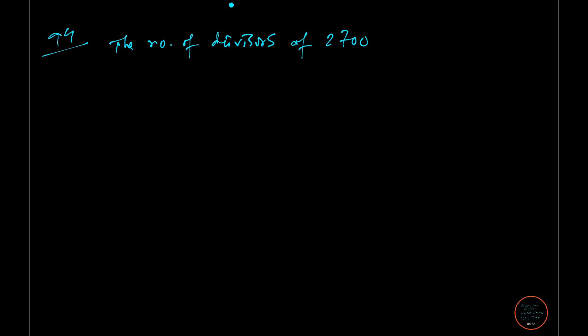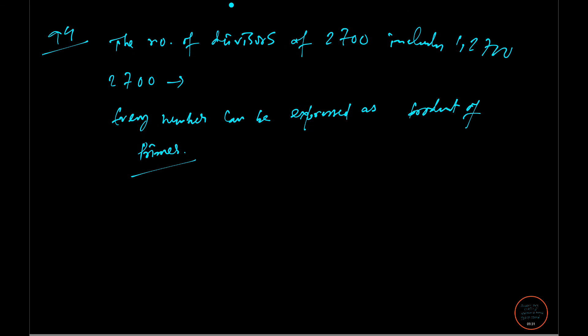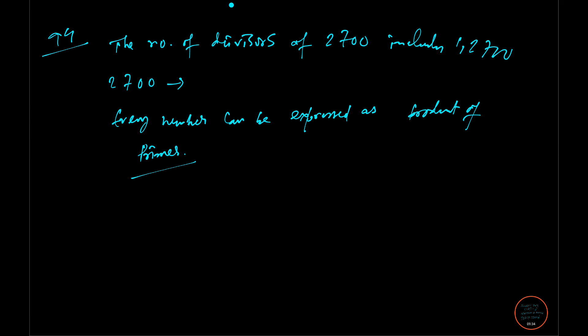Now coming back to the question: the number of divisors of 2700, including 1 and 2700. We need to find the number of divisors. For 2700, we have to break it to the lowest level—the lowest primes. Every number can be expressed as a product of primes. That's a really very important concept. For example, think about any number. I'm not in front of you, so I can't ask you a question, but you ask yourself. Like 39: 3 and 13, both are prime.